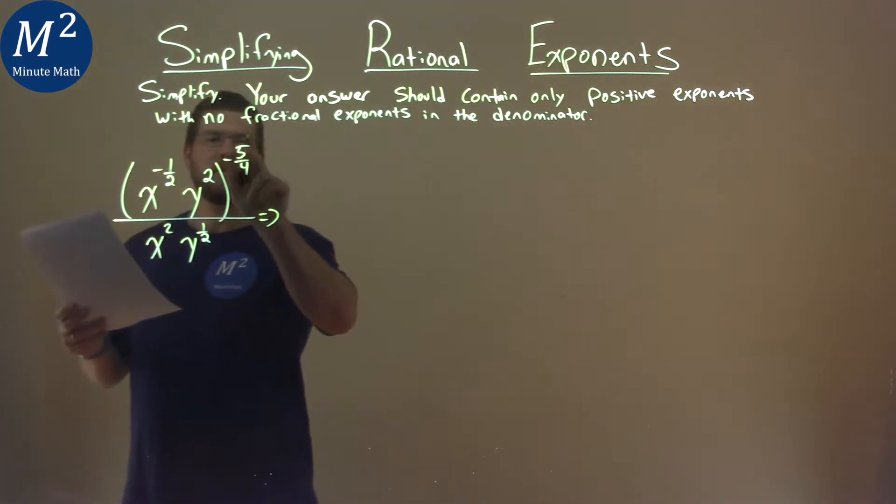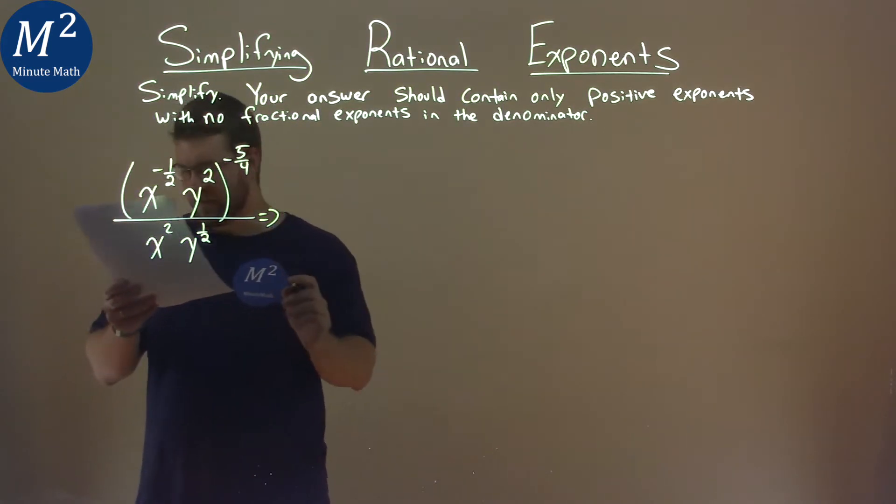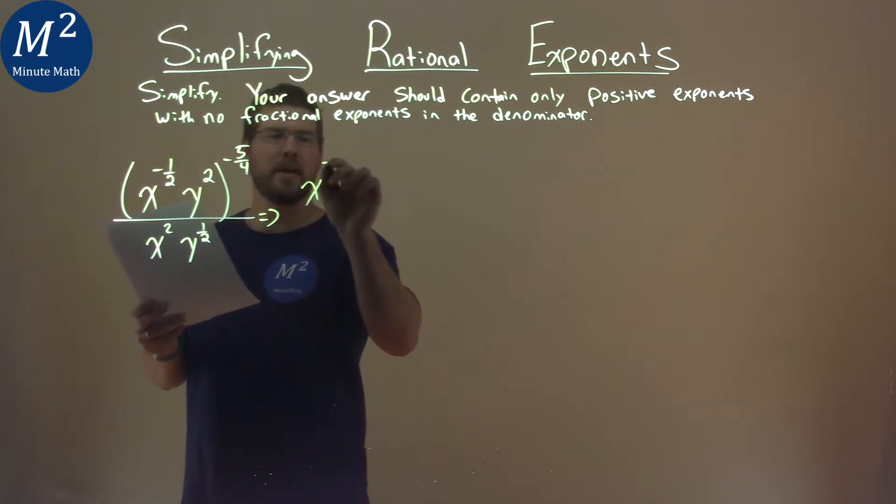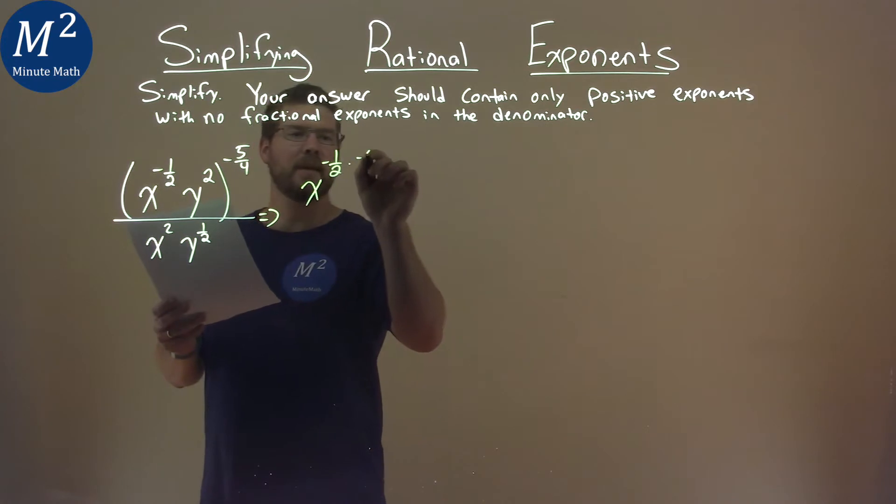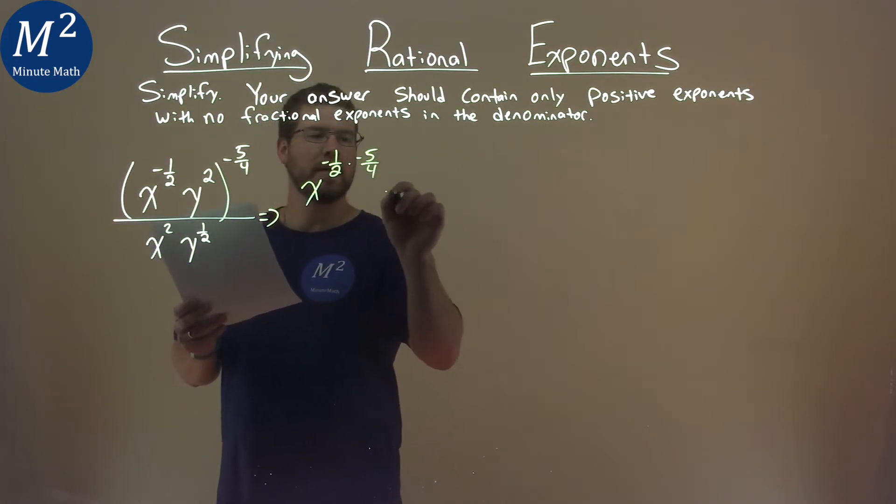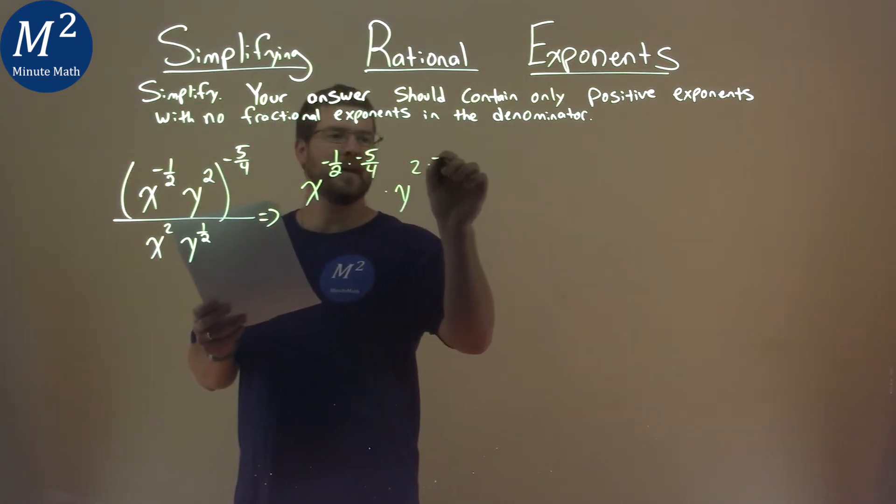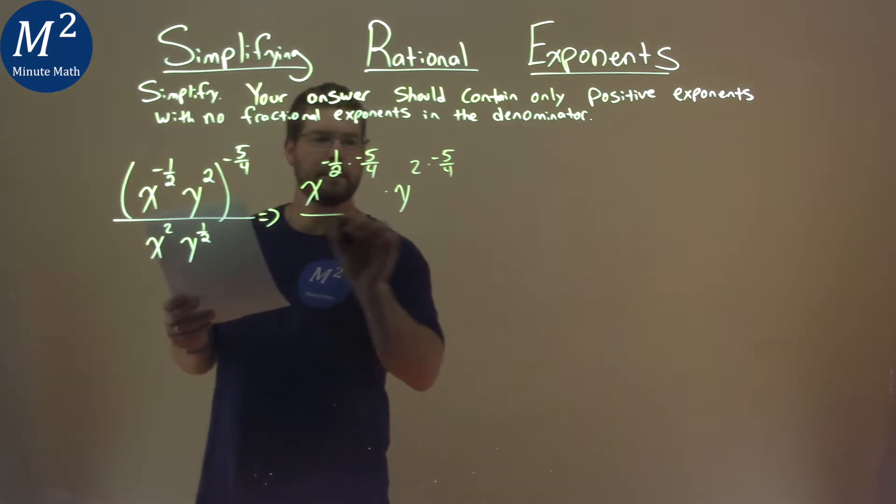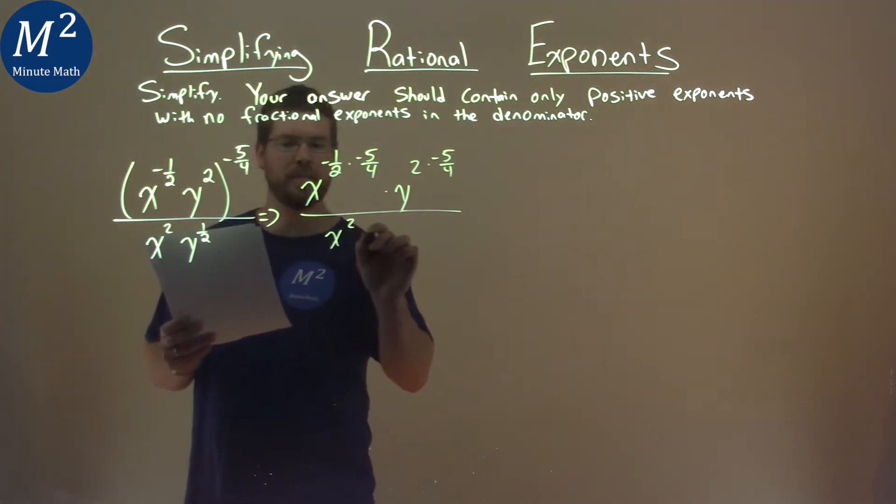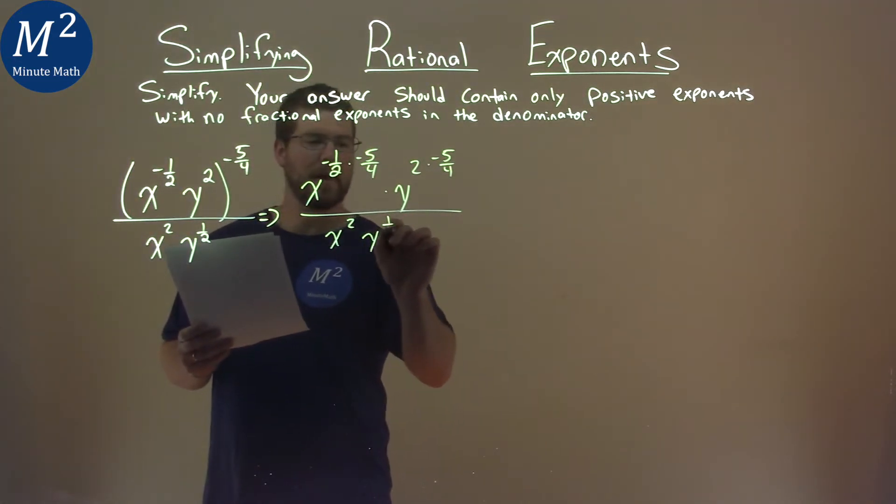Well first thing is, let's distribute this exponent, and we do that by multiplication. So we have x to the negative one-half power, times the negative five-fourths power, times y squared, times the negative five-fourths power, all over x squared, y to the one-half power.